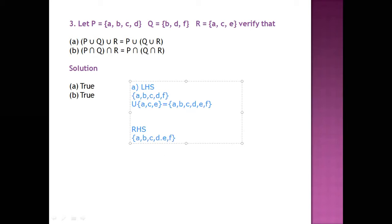And in the right hand side we will combine it with P. So we take the union of Q union R with P. P is {A, B, C, D}.